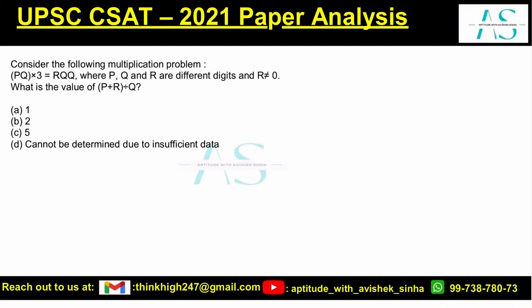Consider the following multiplication problem. PQ is a two-digit number. When it is multiplied with 3, it gives rise to a three-digit number, and that number is QQR or RQQ. Where P, Q, and R are different digits and R is not equal to 0. This data is given to you.